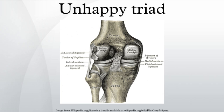Medial meniscus tears were not present in the absence of a lateral meniscus tear. From this study, it was concluded that the structures more typically involved in a triad were the anterior cruciate ligament, medial collateral ligament, and the lateral meniscus.